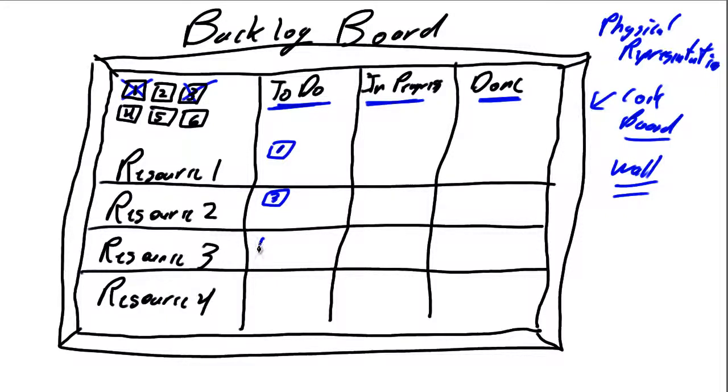Resource number three says, I really like the sound of number five. I'm going to work on that one. And finally, resource number four simply says, I like story number six and begins or expects to do the work on that.